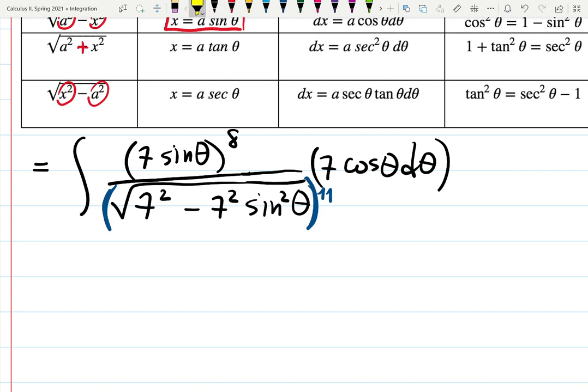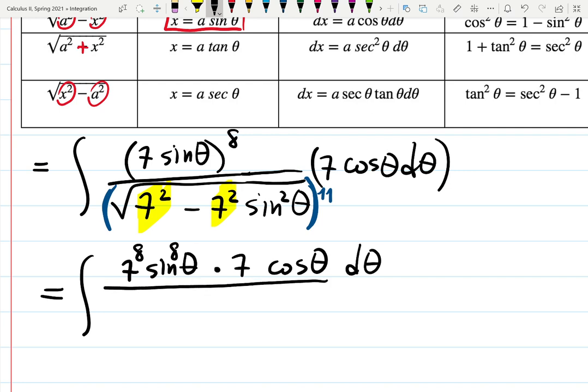So as expected, and it's not coincidence, we want to factor out this 7 squared to end up to have 1 minus sine squared, which is going to become cosine squared. So I'm going to have 7 sine theta to the 8 times 7 cosine theta d theta. I'll put it in the numerator. 7 squared is factored out inside of the square root. So it's going to be just 7 outside of the square root with 11 outside. And then I have 1 minus sine squared theta. So again, I factored out 49, but inside of the square root.